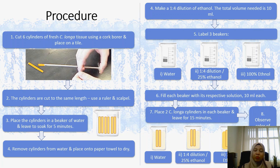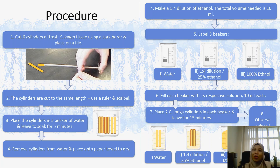Fill each beaker with its respective solution, 10 ml each. Then place 2 kukumalonga cylinders in each beaker and leave them for about 15 minutes. After 15 minutes, observe the colour changes of the solution in every 3 beakers as your results.